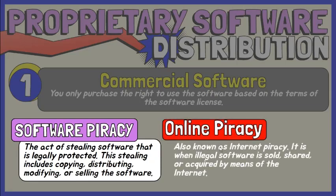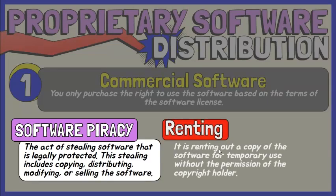Online piracy, also known as internet piracy, is when illegal software is sold, shared, or acquired by means of the internet. This is usually done through a peer-to-peer file sharing system. Renting involves someone renting out a copy of the software for temporary use without the permission of the copyright holder.